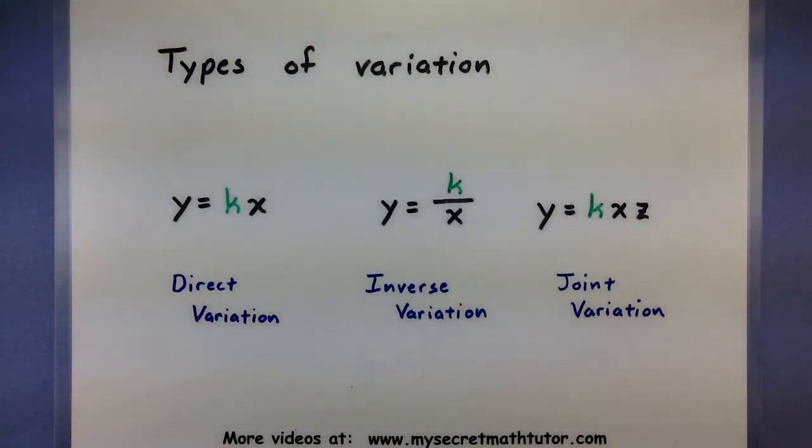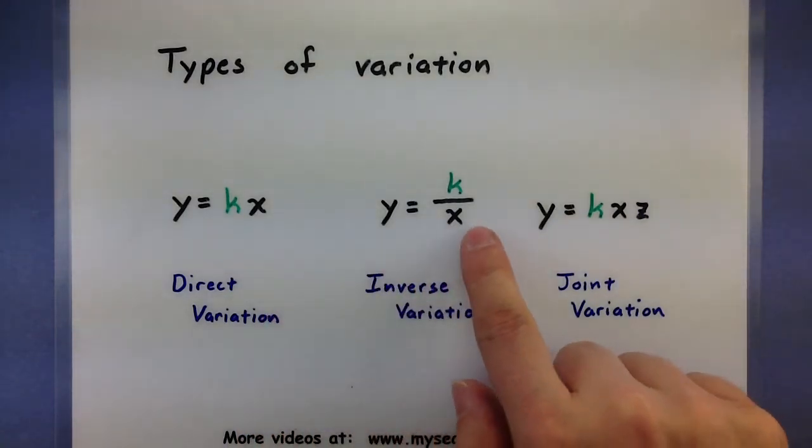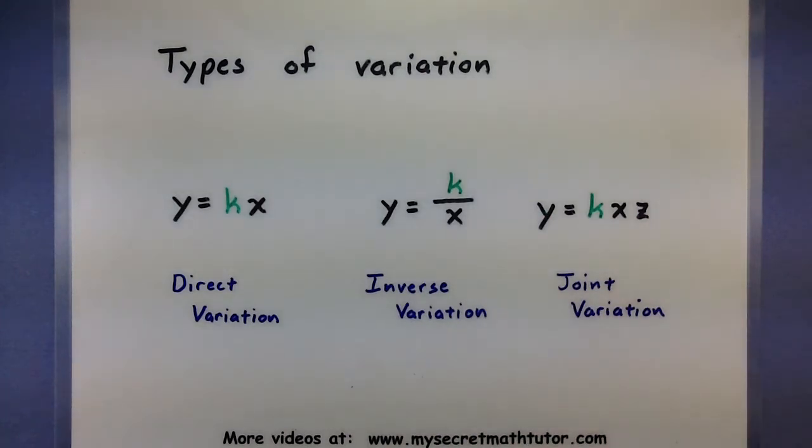So what's the big idea with variation? Well, this is a connection between two variables and it's usually a very special connection that shows up in a lot of different sciences. And depending on how those variables are connected, they will usually fall into one of these three groups.